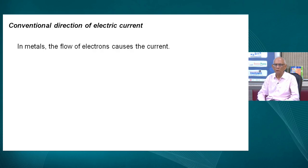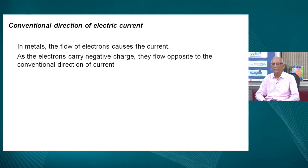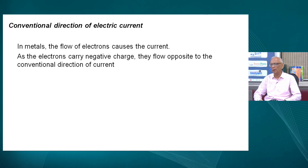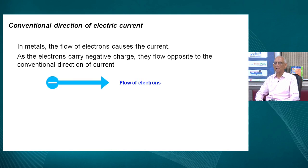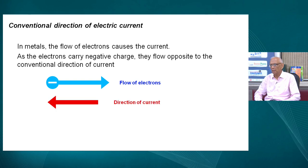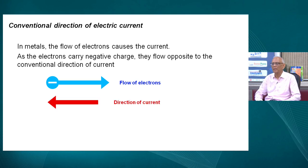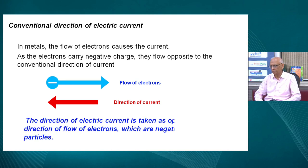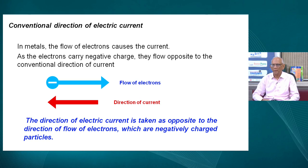In metals, the current flows due to motion of electrons. But electrons carry negative charge, so the electrons flow in a direction opposite to the conventional direction of electric current. As you can see in the diagram, the negative charge symbolizes an electron and the direction of flow is from left to right, but the current is in the opposite direction — right to left. The direction of electric current is taken as opposite to the direction of flow of electrons, which are negatively charged particles.